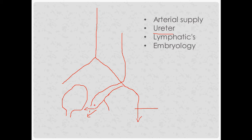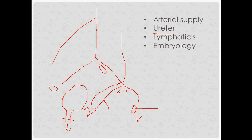Embryology and lymphatics go together. The uterus and upper vagina arise from Müllerian structures and drain to the internal and external iliacs and ultimately the common iliac lymph nodes. The distal vagina has a different origin — the urogenital sinus — and drains to the inguinal lymph nodes near the femoral artery. The ovary's blood supply comes from the abdominal aorta and its lymphatics are para-aortic.